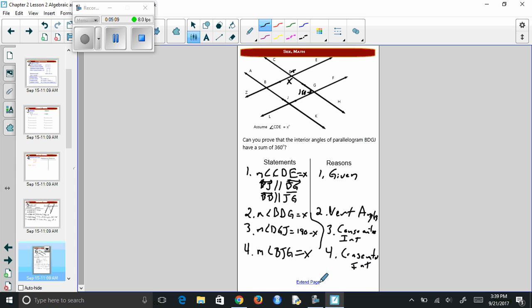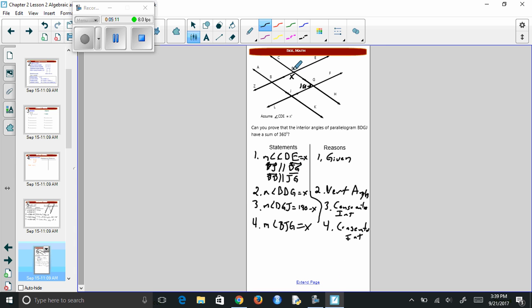And then we could do the same thing, DBJ. 180 minus x. And that's consecutive interiors.